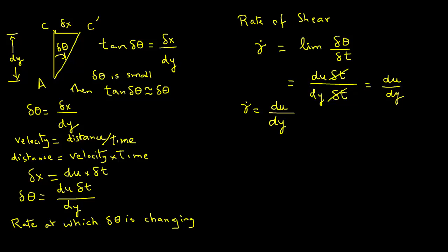Newton observed that when you increase the shearing stress by increasing the force—remember stress is force per unit area—then the rate of shear, gamma dot, will also increase in direct proportion. So the shearing stress, which we give a symbol sigma, is directly proportional to gamma dot. This is based on Newton's observation. And so we can say sigma is proportional to du over dy.